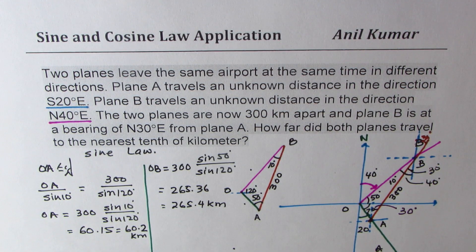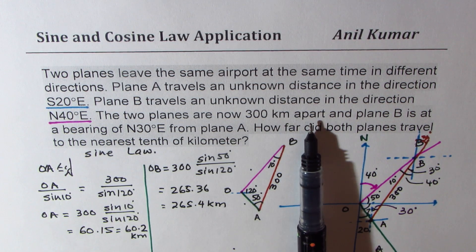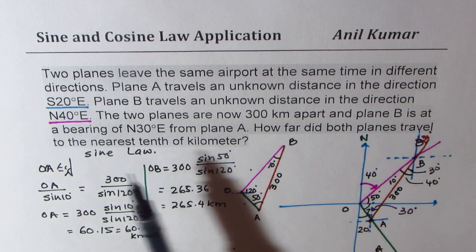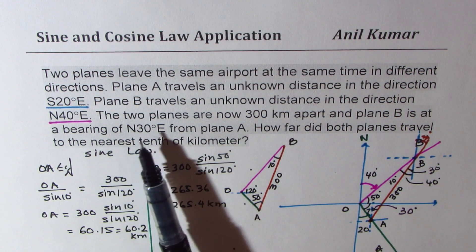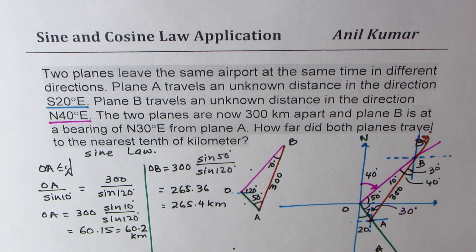So that is how you are going to find the solution of this particular question. I hope it is absolutely clear. Now the second statement which is the two planes are now 300 kilometers apart and plane B is at a bearing of north 30 degrees east from plane A is a kind of tricky statement. So read it carefully. Get a right diagram, analyze the situation, apply sine law. So this is direct application of sine law.